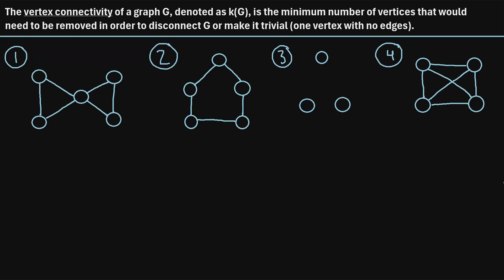The vertex connectivity of a graph G, denoted as kappa of G, is the minimum number of vertices that would need to be removed in order to disconnect G or make it trivial. Recall a trivial graph is just one that has one vertex with no edges.